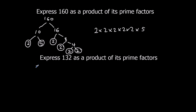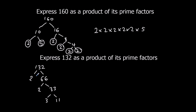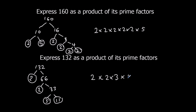For 132: we do 2 times 66. Then 66 is 2 times 33, and 33 is 3 times 11. 2 is prime, 2 is prime, 3 is prime, 11 is prime. So 132 as a product of its prime factors is 2 times 2 times 3 times 11.